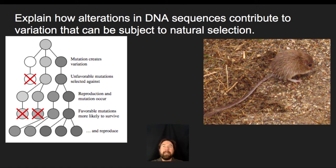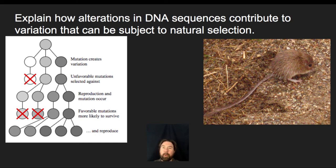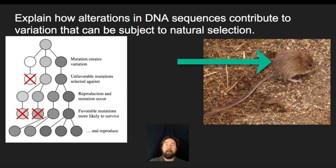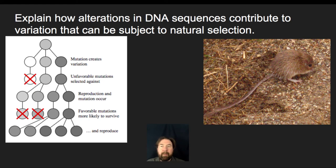How does alteration in DNA sequence contribute to variation that can lead to natural selection? The process of natural selection involves two key components: variation in the population and overproduction — more offspring are produced than can survive. An initial population produces young that look different from one another. That variation goes out to the environment, and selective pressure determines how well individuals survive and reproduce. For example, the rock pocket mouse — originally the population had variation ranging from very dark brown to very light tan in color.